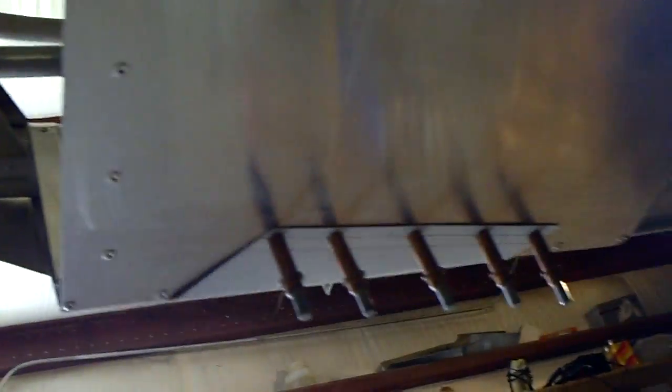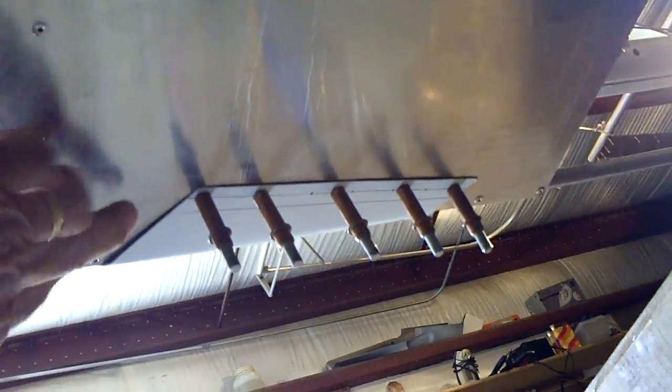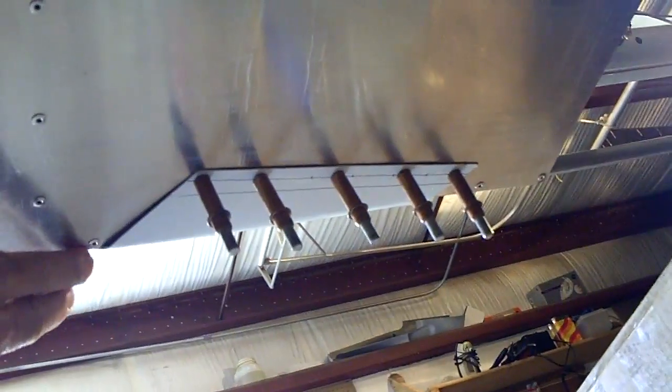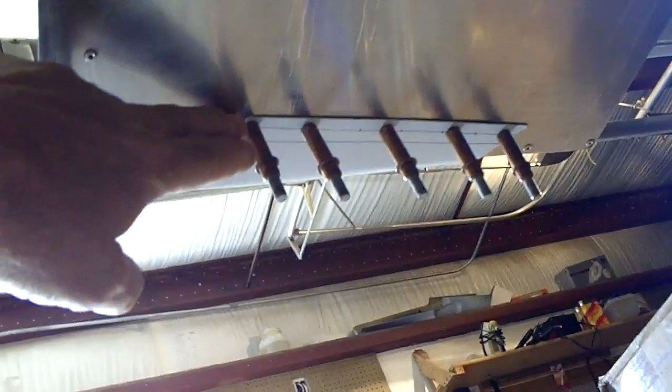Ultimately, it gets bent over and then gets riveted to the bottom of the seat pan area. So you can see where I had made a marked line on the inside. You'll see the details on that in the builder's manual and the photographs.